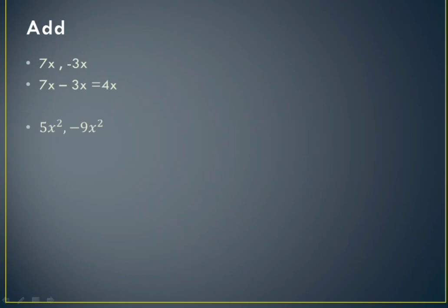Both have x squared so they are also like terms. We can write 5x squared minus 9x squared, and that is minus 4x squared. Now next: 1/2 p cubed and minus 1/3 p cubed, so we need to add them.